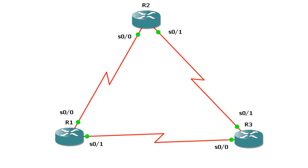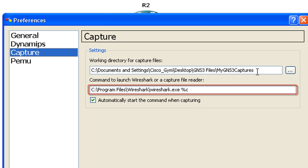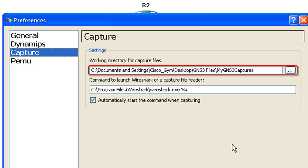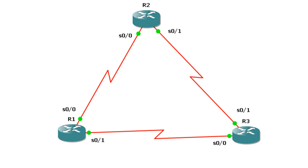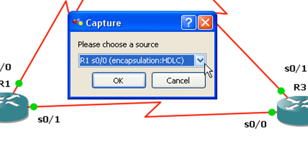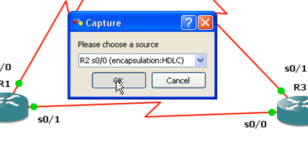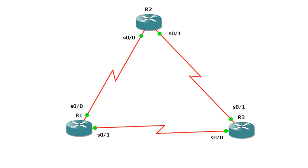With GNS3, you might have to set up preferences — go to Edit, Preferences, then Capture and point it to the application, and you can set up a file for your captures. So we're going to take a look at Telnet traffic sourced from R2 accessing R1. We'll click on the link between R2 and R1, right-click it, hit Capture, and pick R2 S0/0 with the encapsulation of HDLC, because that's what we're using by default. Hit OK and Wireshark should come up — and there we go.